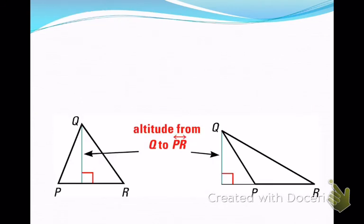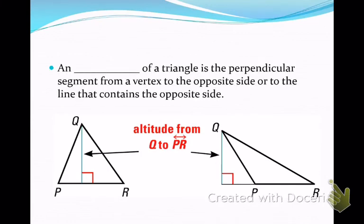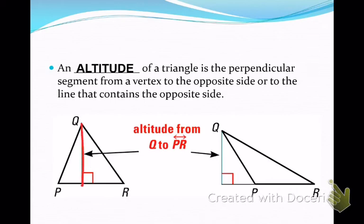The centroid is the center of gravity for the triangle and it divides each median into a two-thirds, one-third length relationship. Now, altitudes. The altitude of a triangle is a segment that is drawn from the vertex and is perpendicular to the opposite side. As you see here, in the case of triangle QPR on the left-hand side, the altitude is definitely inside — we go from the vertex and draw a segment perpendicular to the opposite side.